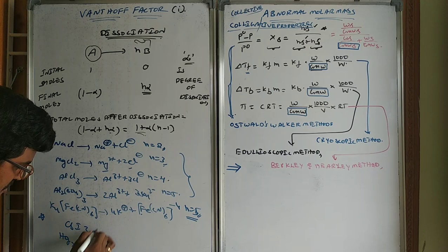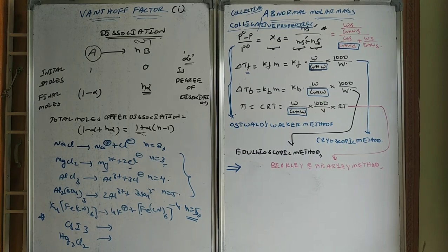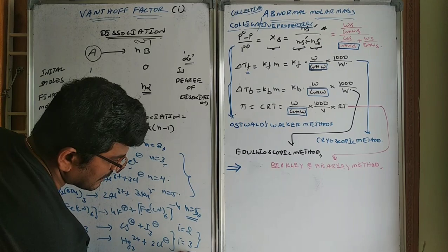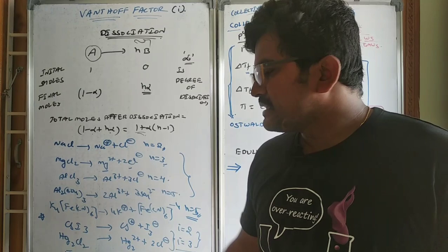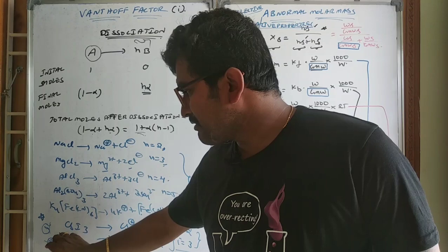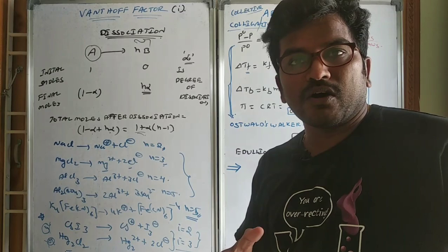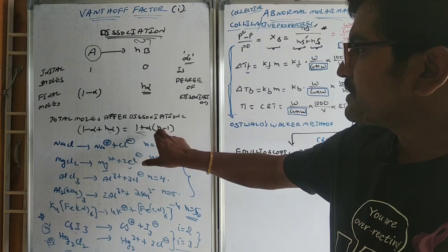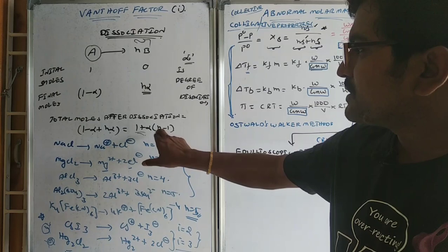Some exceptional compounds: CsI₃ and Hg₂Cl₂. For CsI₃, it gives I₃⁻ (not 3I⁻), so i = 2. For Hg₂Cl₂, it gives Hg₂²⁺ + 2Cl⁻, so i = 3. Normally you might write Cs⁺ + 3I⁻ giving i = 4, which is wrong. Having knowledge of different compounds is very important.